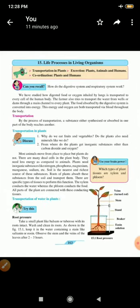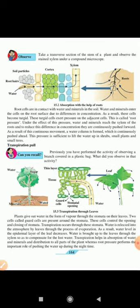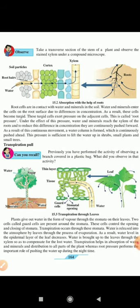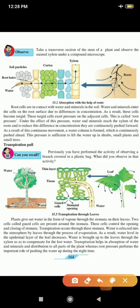Let us go to the next page, page 164. Take a transverse section of the stem of a plant and observe the stained xylem under the compound microscope. Transverse means horizontal section. Look at the picture 15.2, absorption with the help of roots. Here we have taken a section of this small square in the roots. You can see the big blue arrow. That is enlarged picture. Water is absorbed by the root hairs. You can see the root hairs are marked there. From the root hairs, it goes to the cortex of the plant, their cortex is a tissue. And then from there, it goes into the xylem. You can see the arrows, how the water is being transported. You can see the soil particles also.